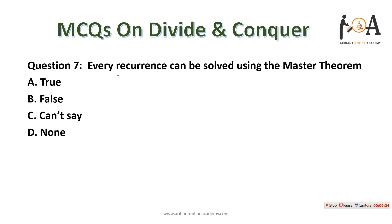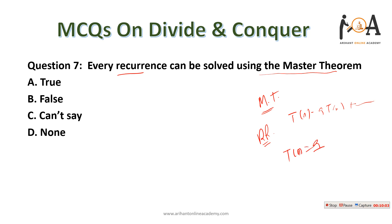The next question: can every recurrence be solved using the master theorem? The master theorem is used to find time complexity of recurrence relations in a specific format like T(N/B) + f(N). However, there are many recurrence relations — for example with A/C in the denominator — for which you cannot apply the master theorem. So this statement is false.